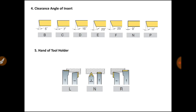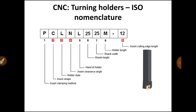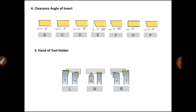The fourth location denotes the insert clearance angle. The clearance angle avoids rubbing action — during machining, the insert may rub over the surface of the workpiece, and the clearance angle prevents that. Letter B denotes 5 degree clearance angle, letter C denotes 7 degree, then 15 degree, 20 degree, 25 degree, 0 degree, and 11 degree options are available. In our designation, the letter N is written, so the insert clearance angle is 0 degree.